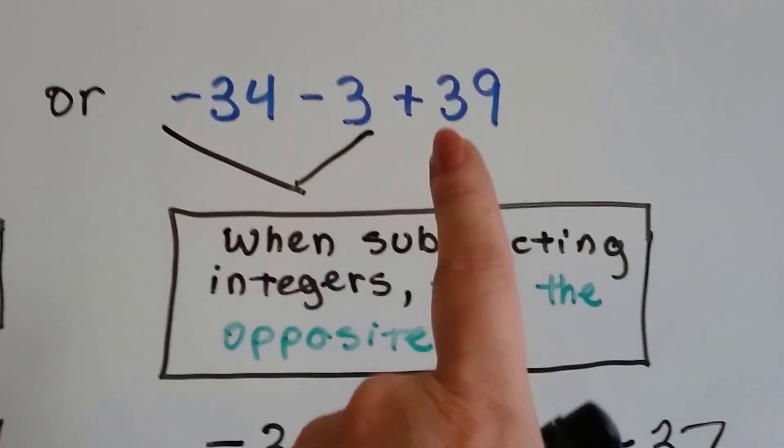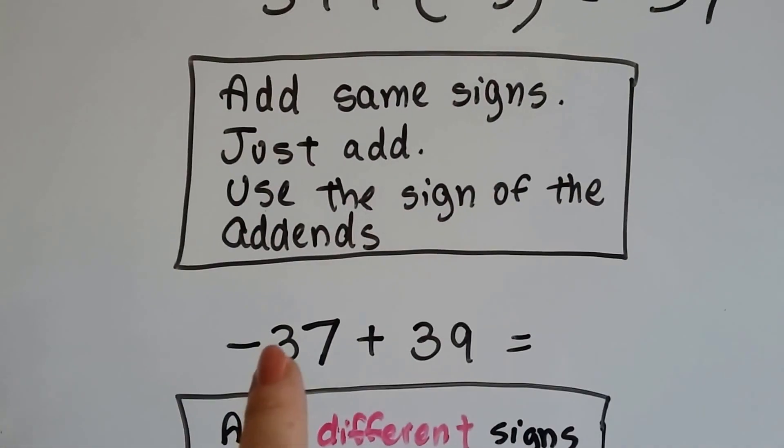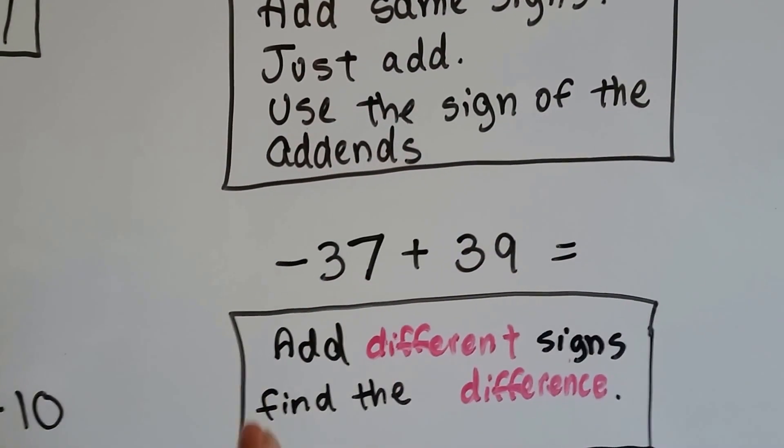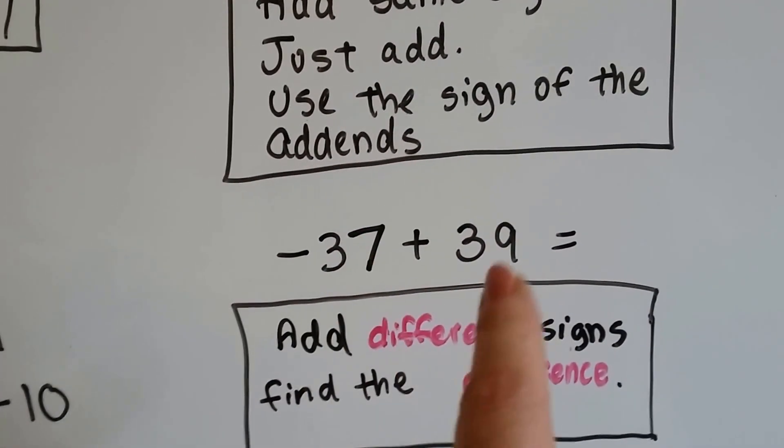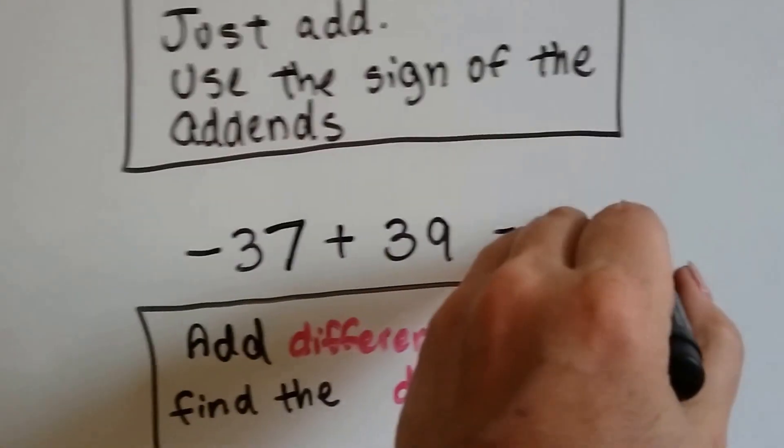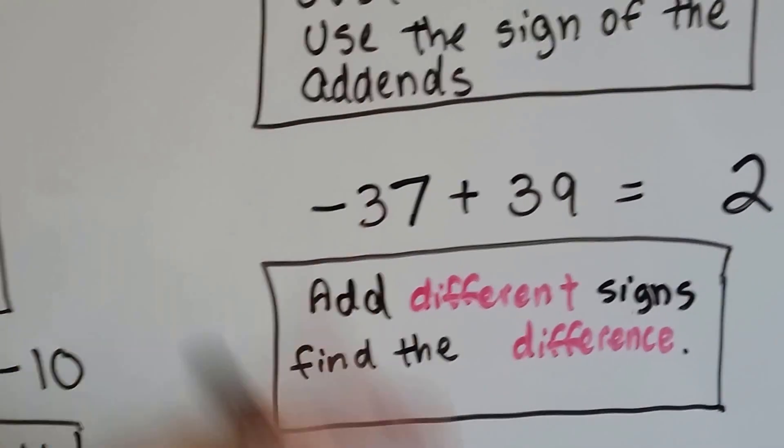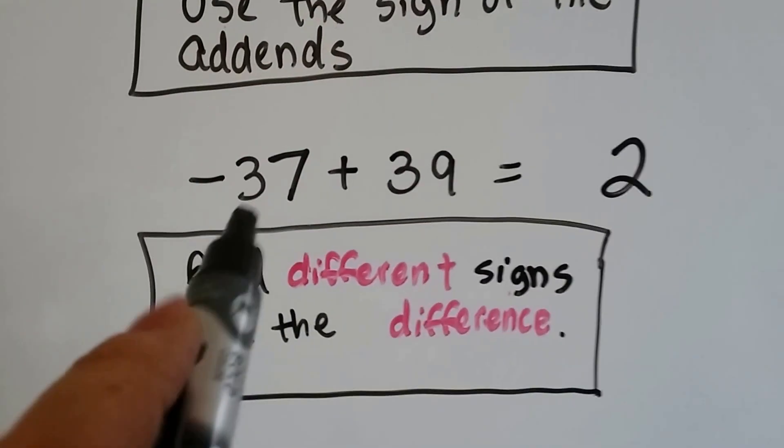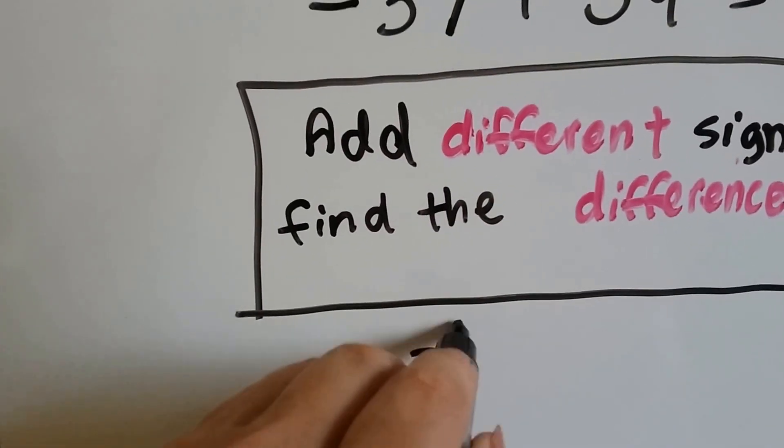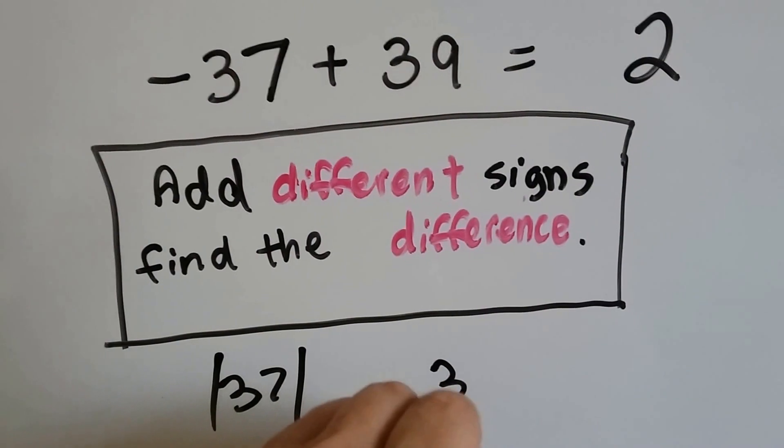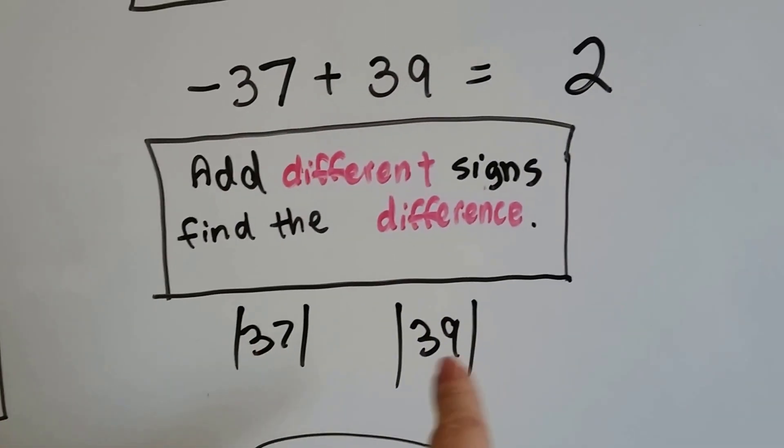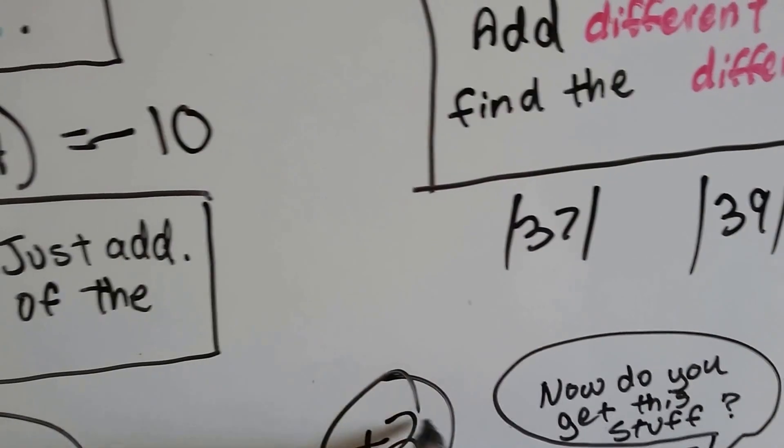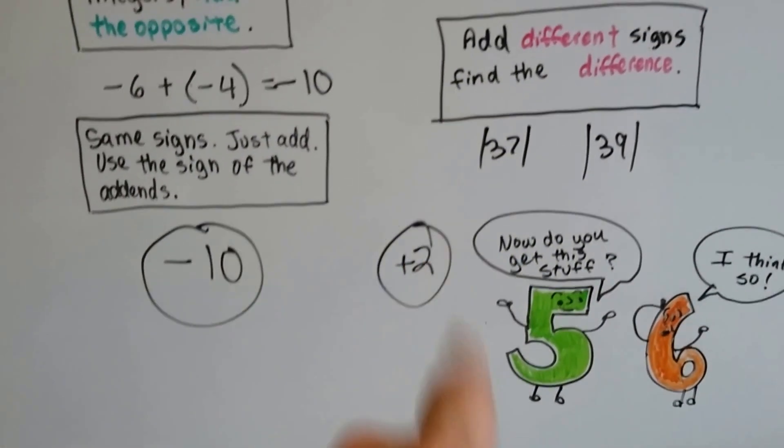So, now we got a negative 37. But, we can't forget we've got to add this 39. We have a negative 37 plus a positive 39. And, when they're different signs, we're adding different signs, we find the difference. What's the difference between 37 and 39? 2. Right? There's a 2 difference. 37, 38, 39. 2. And, what do we do? We take the sign of the one with the greater absolute value. The absolute value of negative 37 is just 37. The absolute value of 39 is 39. And, the bigger one is the 39. And, it's positive. So, it's going to be a positive 2. So, this one's answer is a positive 2. So, now we're comparing. This is a negative 10 and that's a positive 2.